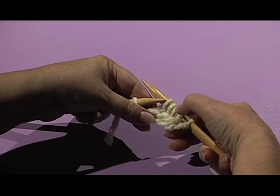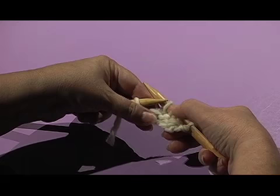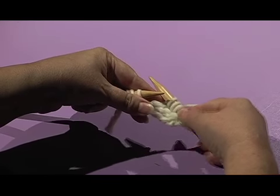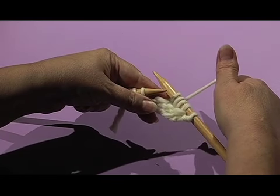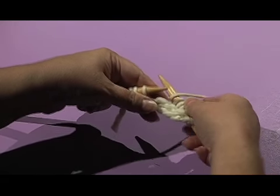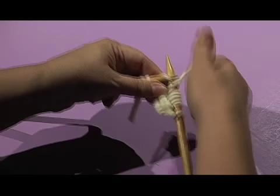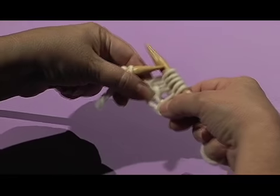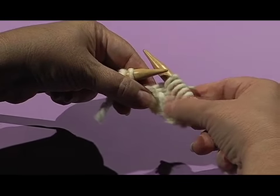And now you can see that there is a knit stitch, a yarn over, and a knit stitch. Now I'm going to yarn over again and knit the next stitch. And so I've increased another stitch on my right hand needle.